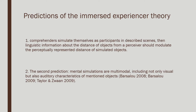There are two primary predictions of this immersed experiencer theory within the mental simulation idea. One is that comprehenders simulate themselves as participants in the described scenes, and linguistic information about the distance of objects from a perceiver should modulate the perceptually represented distance of the simulated objects. The second prediction is that mental simulations are multimodal — not only visual but also auditory characteristics of the objects.